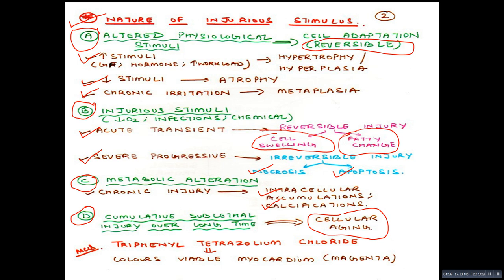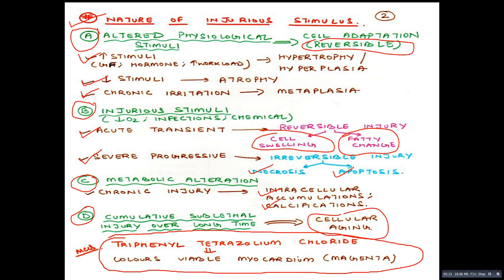One important MCQ: which dye helps us differentiate dead myocardium from viable myocardium? The answer is triphenyl tetrazolium chloride, and it stains only the viable myocardium magenta colored.